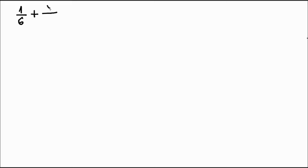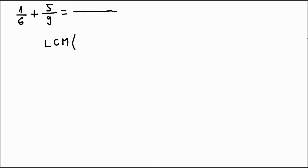Let's take one sixth plus five ninths, for example. Now the denominator is not the same, so we can't copy it. First, we need to bring the fractions to a common denominator. Let's draw a long line for the fraction and find the lowest common multiple of six and nine — our two denominators. This means we are looking for the lowest number that can be divided by both six and nine without any remainders.